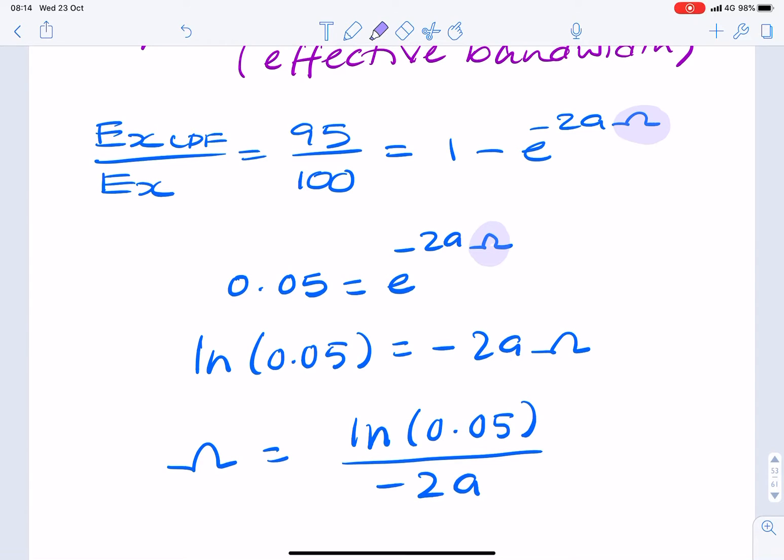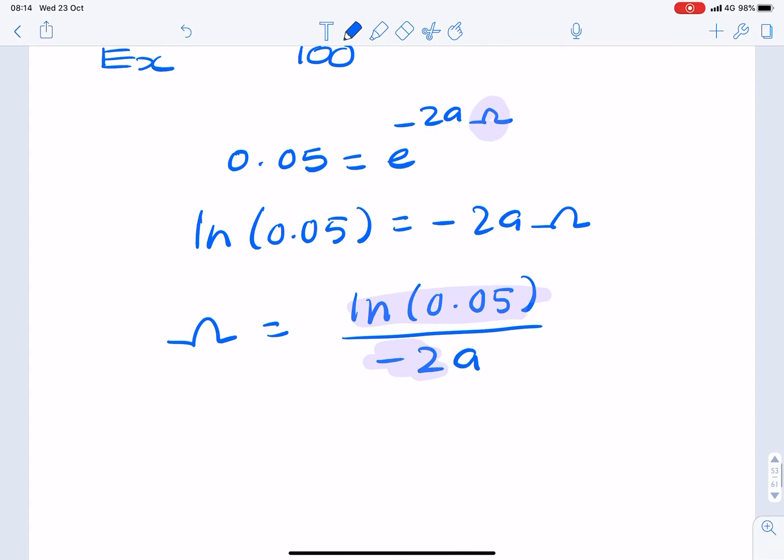Now, we don't know a, but we can certainly calculate that. So in the calculator, it's log of 0.05 divided by minus 2, equals roughly to two significant figures, 1.5 over a. And that's in radians per second, because what we found is a value for omega.